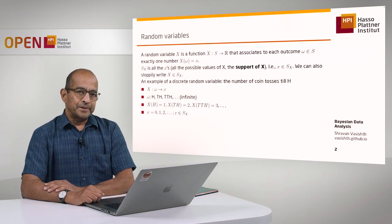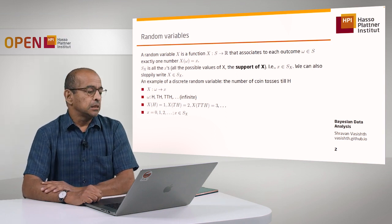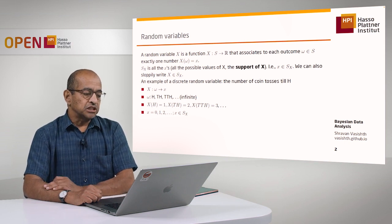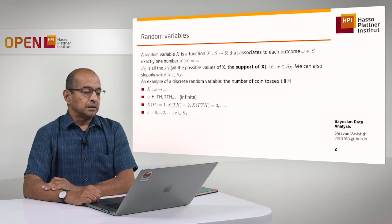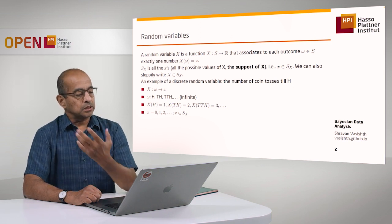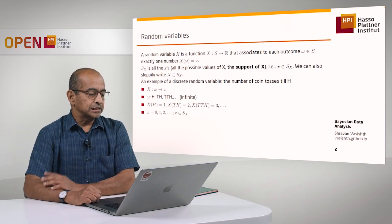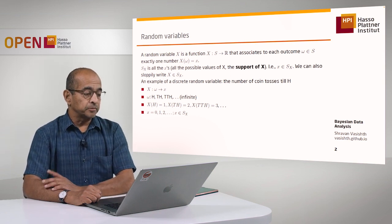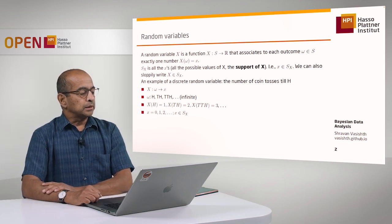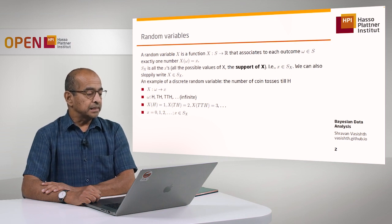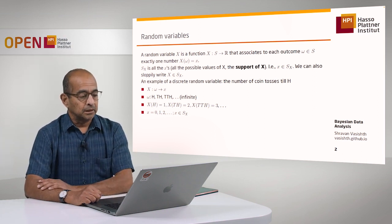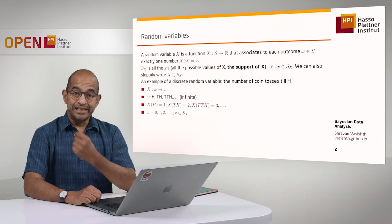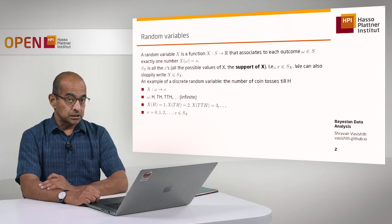I want to begin by explaining what a random variable is. A random variable is a function that maps one set to the set of real numbers. It associates each outcome in the set S with a particular real number. We're going to call this set S of X the support of X, and this set contains all the real numbers that are mapped onto by the random variable.